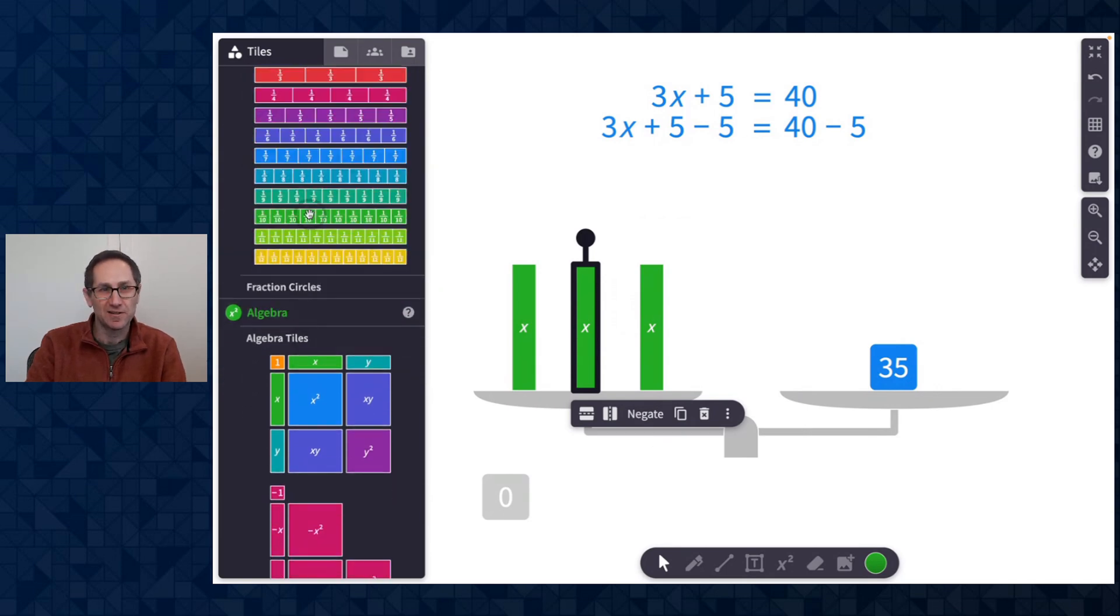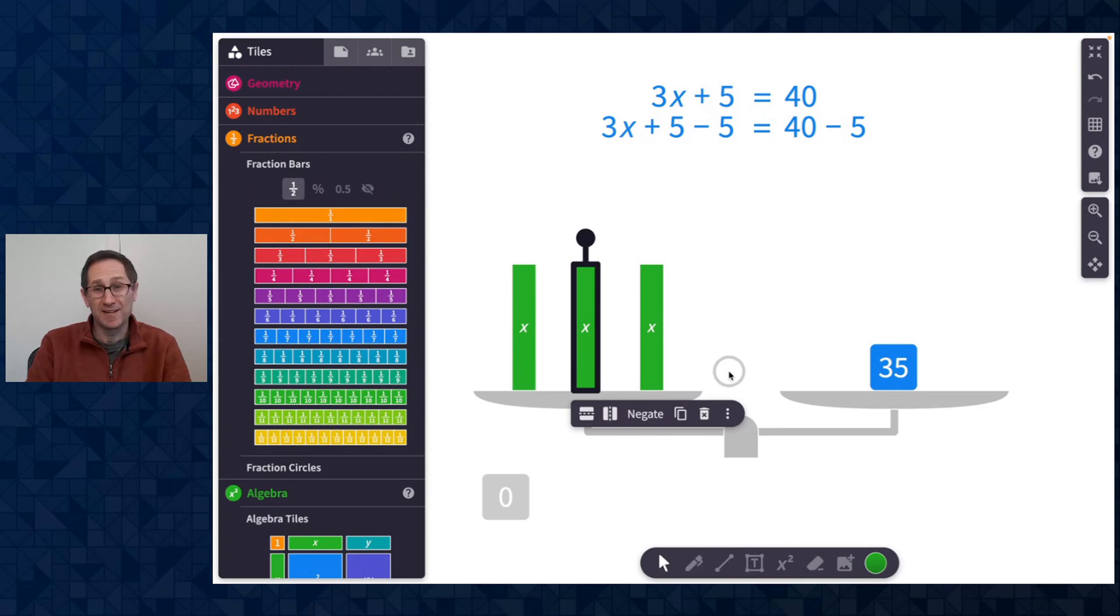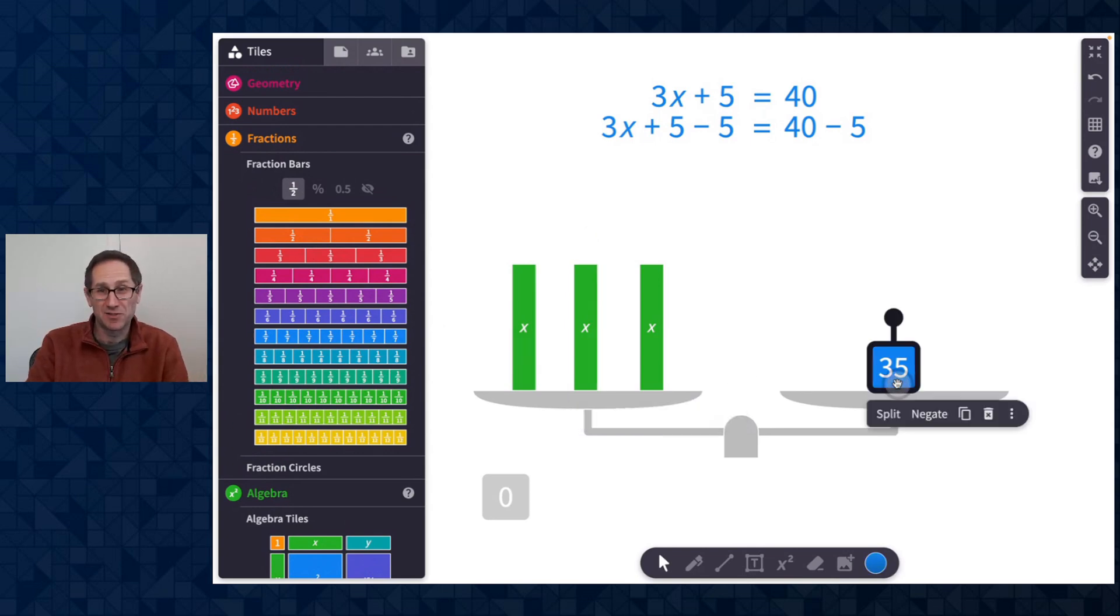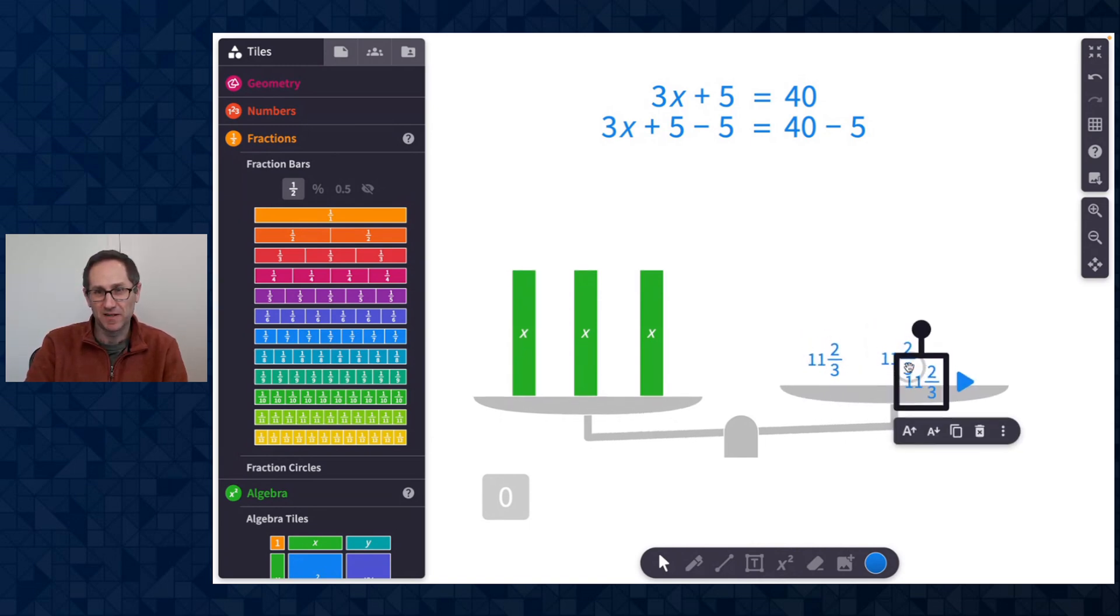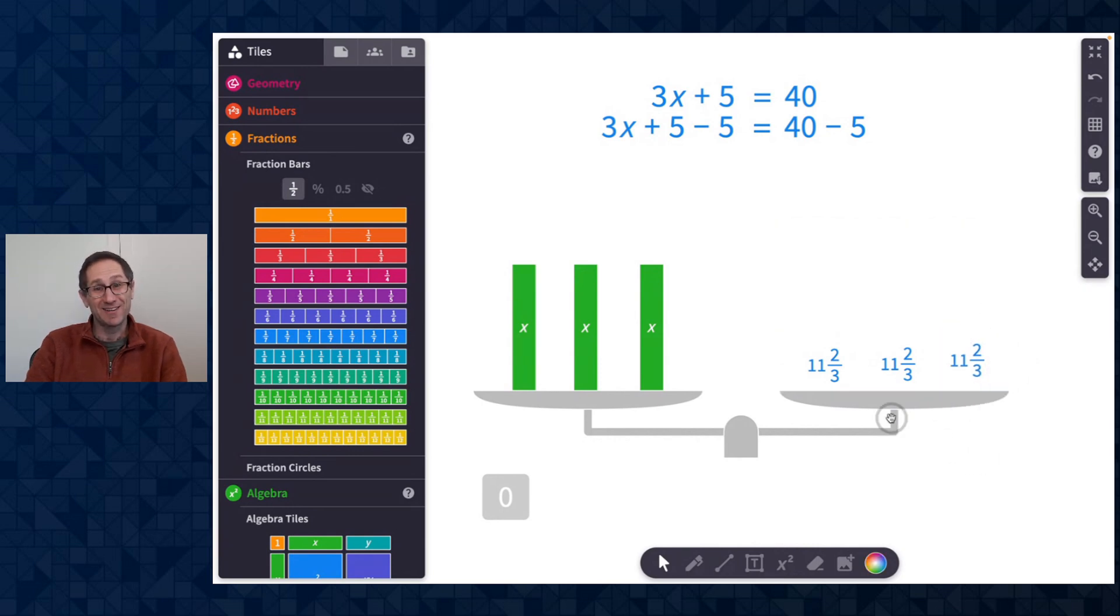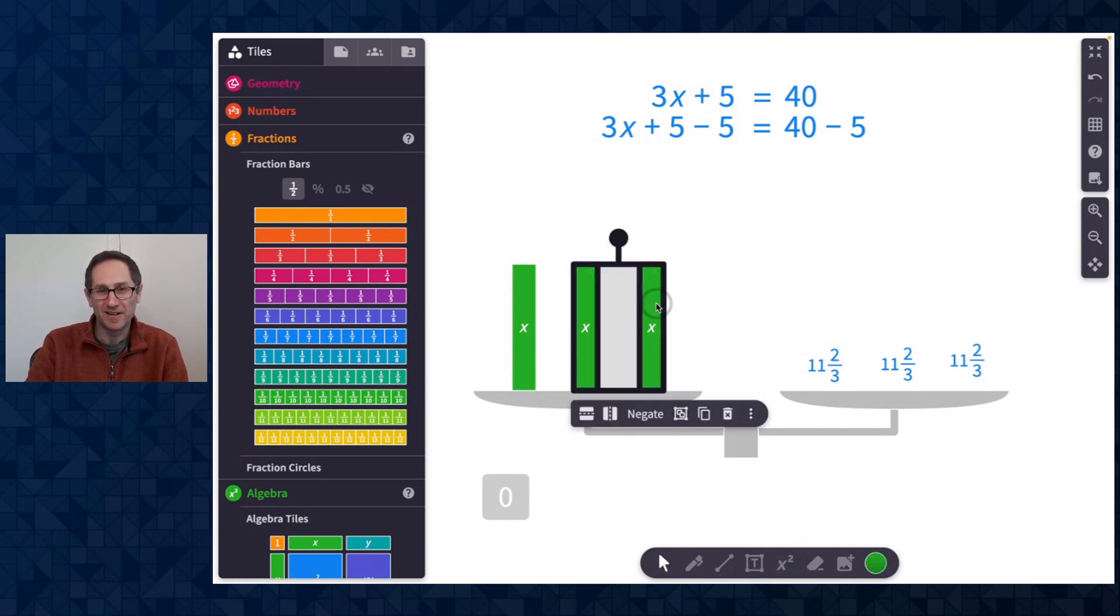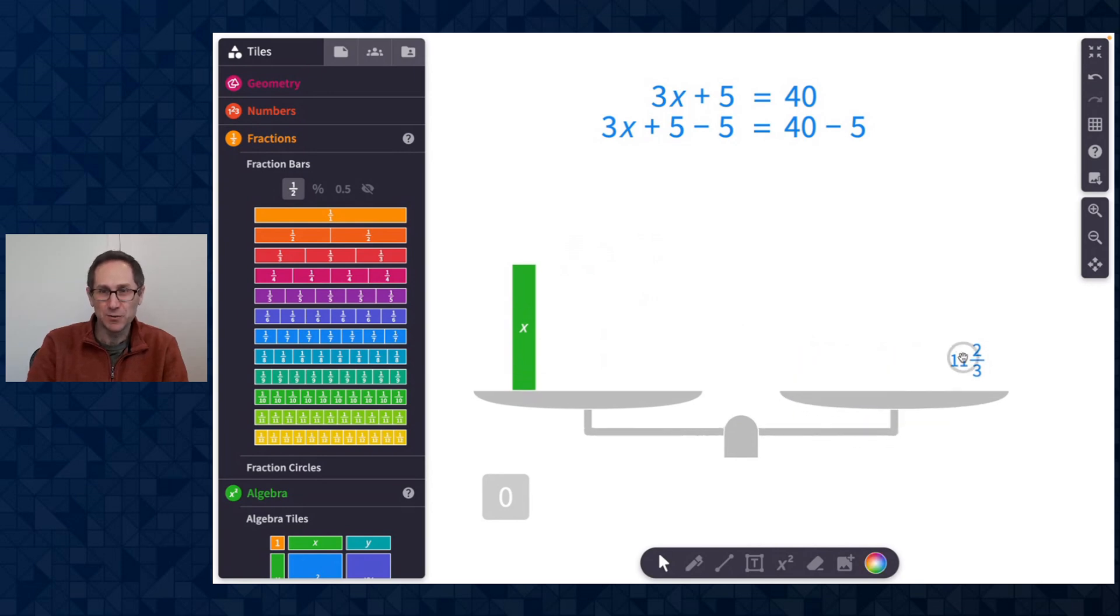And now I have three X's balancing with 35. So I have to do 35 split into three groups. So many ways to use the fraction bars on Polypad to show that division. If interested, I'm just going to jump right to the answer here. I think that is 11 and two thirds. So I'm going to type two thirds as a fraction with 11. It doesn't balance yet, but I could see if it balances by doing something like that. There's three 11 and two thirds. I use the equation tool at the bottom here to type in 11 and two thirds. And now I can get rid of two of the X's and two of the 11 and two thirds. And indeed, I have solved that equation. One X is 11 and two thirds. Awesome.